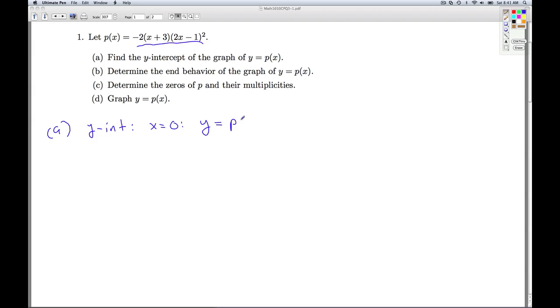So y is P of 0, which is going to be negative 2 times 0 plus 3 times 2 times 0 minus 1 quantity squared. When we simplify, we get negative 2, 0 plus 3 is 3, 2 times 0 is 0, minus 1 is negative 1 quantity squared. When the dust settles, we get negative 6.